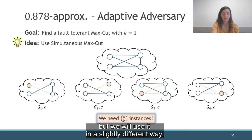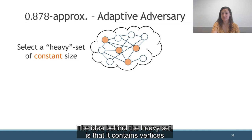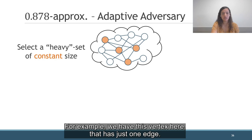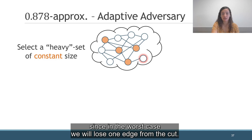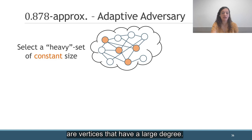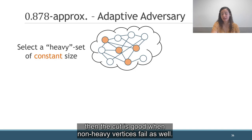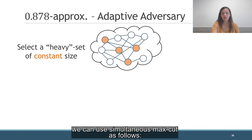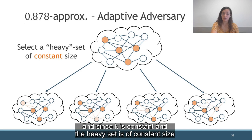The idea is to identify a set of constant size, which we call the heavy set. The idea behind the heavy set is that it contains vertices whose failure affects the size of the cut dramatically. For example, a vertex with just one edge: we don't really care if the adversary removes this vertex, since in the worst case we will lose one edge from the cut. Intuitively, vertices that interest us are vertices that have a large degree. The motivation is that if we have a cut that is good when heavy vertices fail, then the cut is good when non-heavy vertices fail as well. Then, assuming we have such a heavy set, we can use simultaneous MaxCut on the instances corresponding to all options of removing k heavy vertices, and since k is constant and the heavy set is of constant size, we have a constant number of instances.